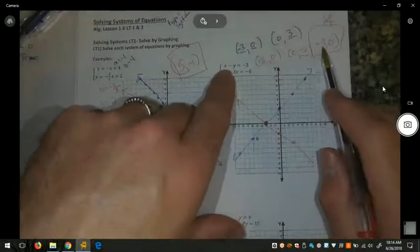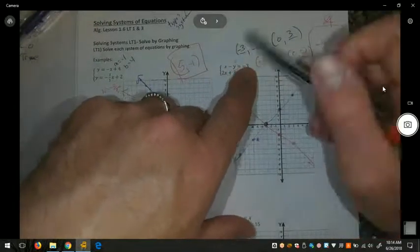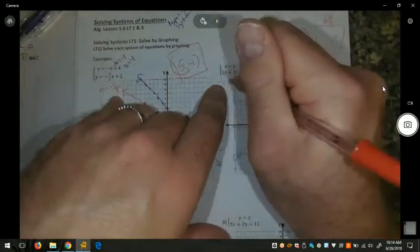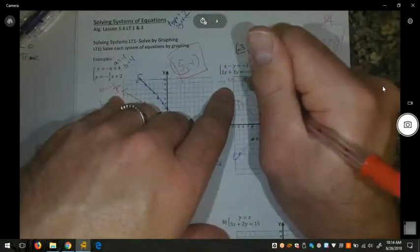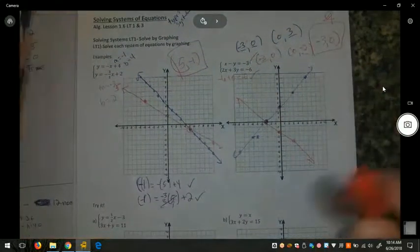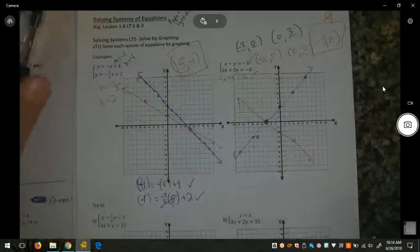We're going to plug that into both equations to make sure. So we have negative 3 minus 0 equals negative 3. Correct. Negative 6 plus 0 equals negative 6. That works as well. Please pause the video and take a moment to try the bottom two problems.